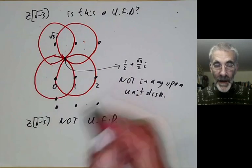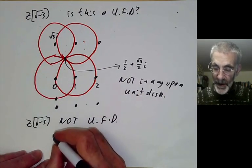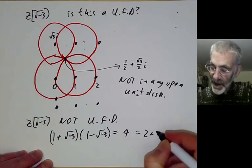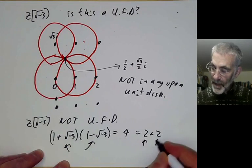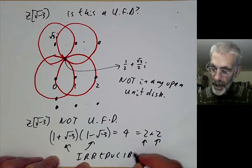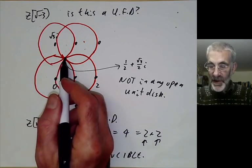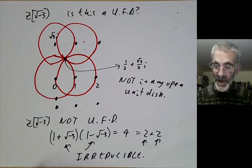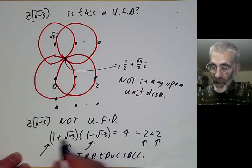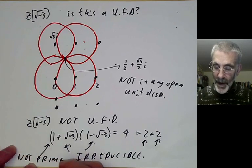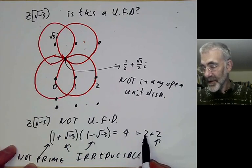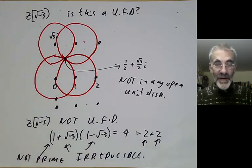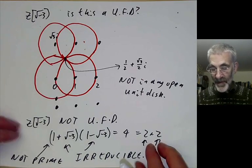We can easily find a non-unique factorization: (1 + √-3)(1 - √-3) equals 4, which also equals 2 times 2, and all of these factors are irreducible. Furthermore, they're not unit multiples of each other — the only units are plus or minus 1. So here we have two different factorizations of 4 into irreducibles. Notice that 1 + √-3 is not prime: it divides 2 times 2 but doesn't divide either factor of 2. So we have an irreducible element that isn't prime.